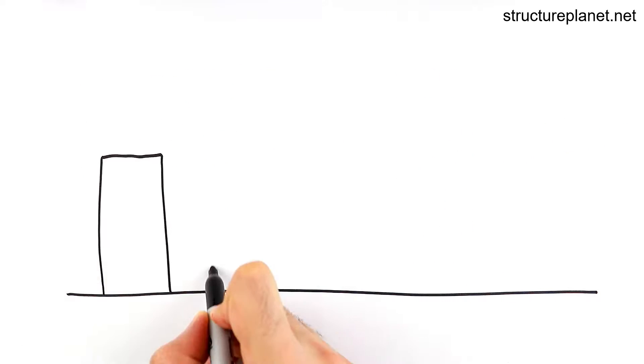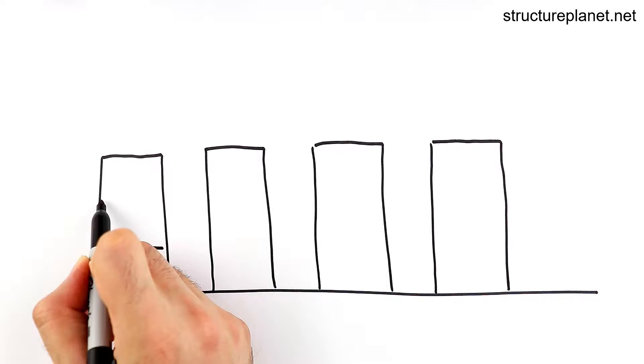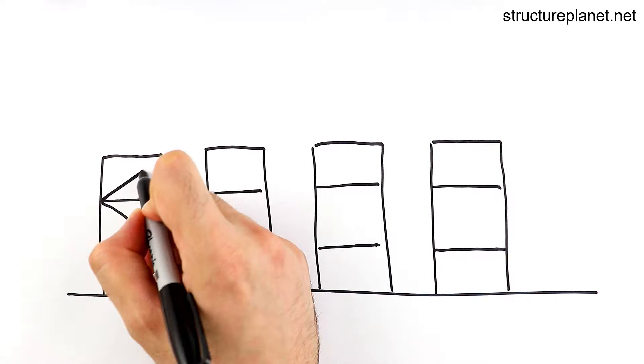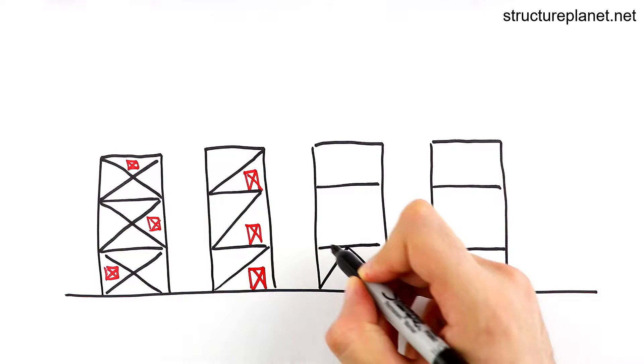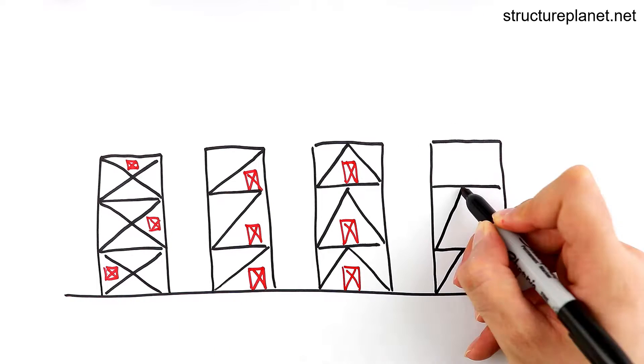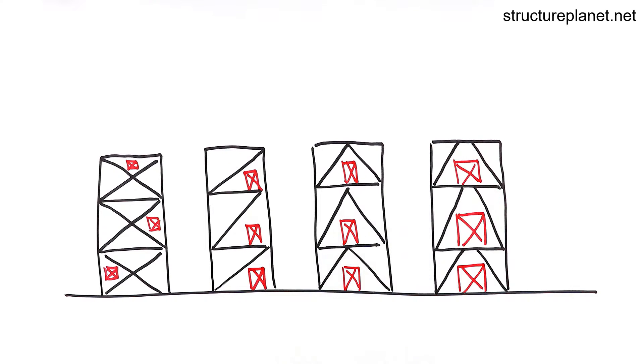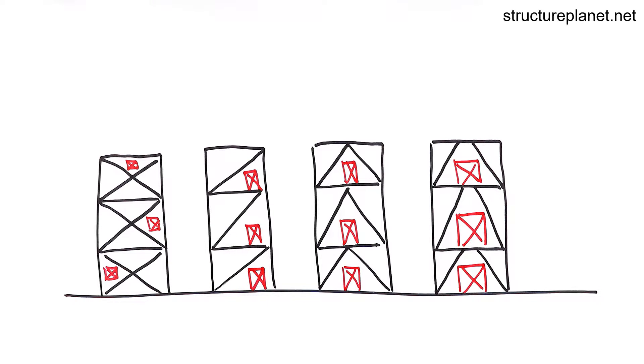Steel braces come in many different forms such as cross, diagonal, V, inverted V and others. Both concrete shear wall and steel bracing systems block open spaces to some extent but provide relatively high stiffnesses.